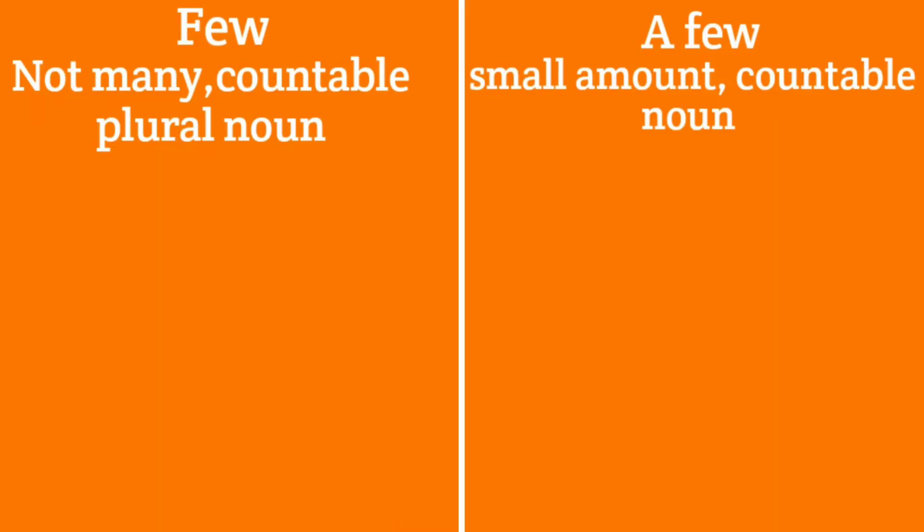Few and a few work the same way, but they are used with countable plural nouns — for example, few friends, few students, few people. Few means not many — a negative attitude. A few means a small amount — a positive attitude with countable nouns.